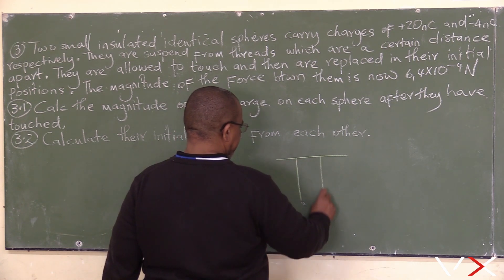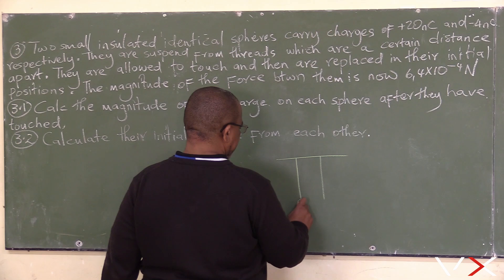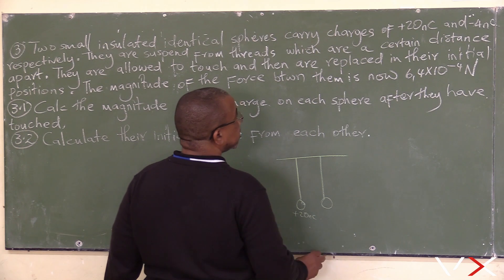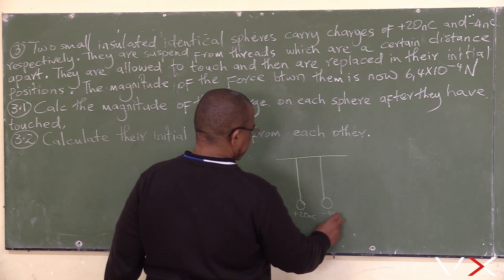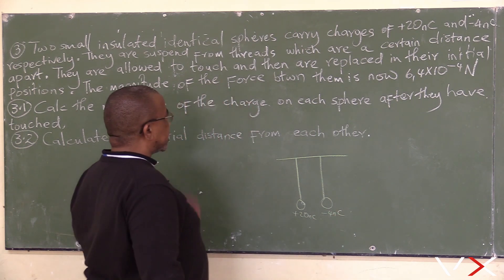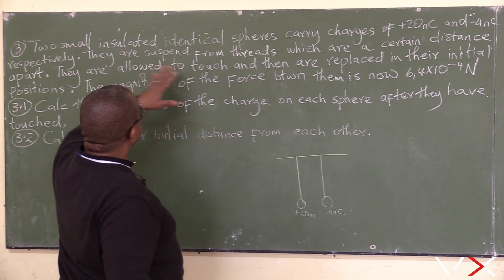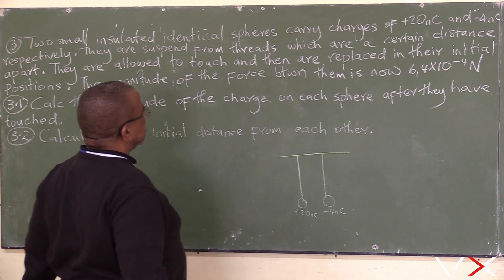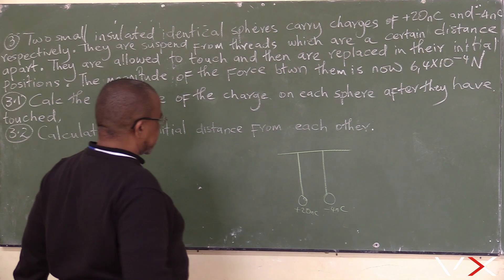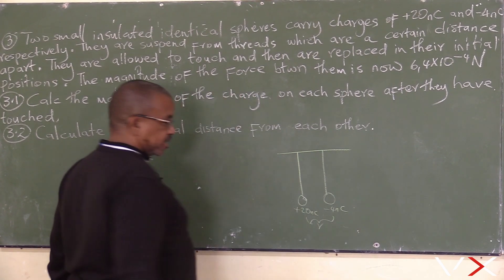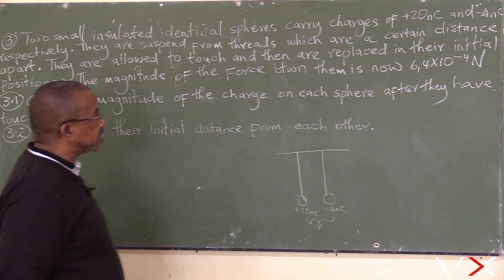We have these identical spheres — one is plus 20 nanocoulombs and the other is minus 4 nanocoulombs. They are suspended from threads at a certain distance apart.